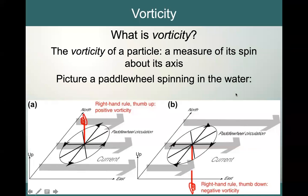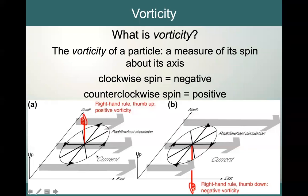To understand how we can quantify this spin, we use the right-hand rule. Take your fingers and curl them around the direction of the spin in figure A. For A, when you curl your fingers in this counterclockwise direction, your thumb is pointing up — this is called positive vorticity. For figure B, point your fingers in the clockwise direction that the paddle wheel is spinning, and your thumb points downward — that would be negative vorticity.